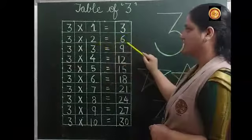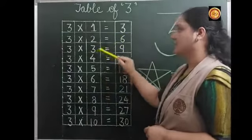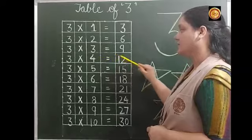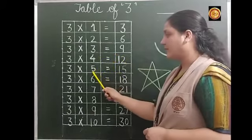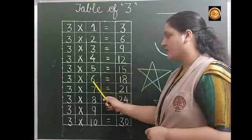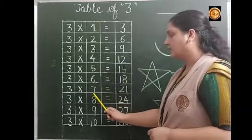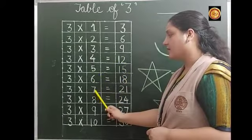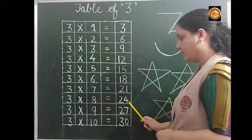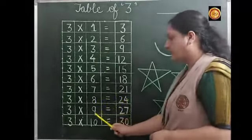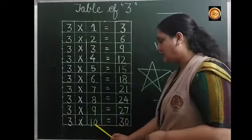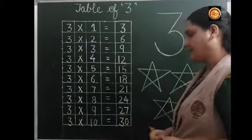3 2's are 6. 3 3's are 9. 3 4's are 12. 3 5's are 15. 3 6's are 18. 3 7's are 21. 3 8's are 24. 3 9's are 27. 3 10's are 30.